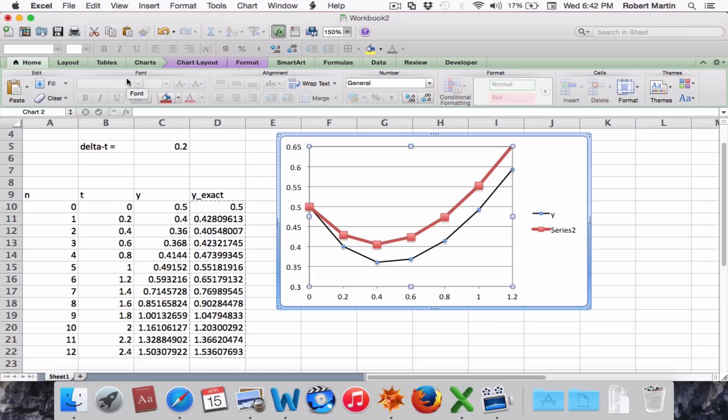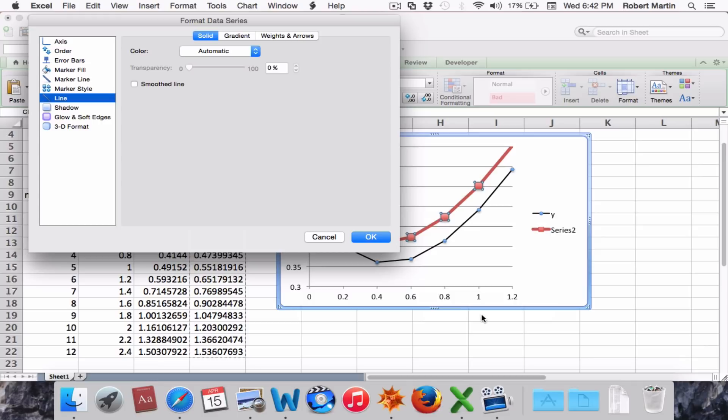I'd like to edit this. This time I'm going to right-click on the exact solution and choose format data series. For the marker style, this time we're going to choose no marker. For line,